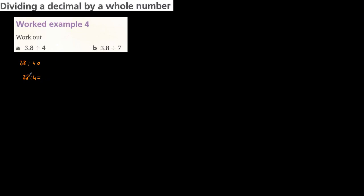In 3 we don't have a 4, so we check 38. We have 9 times 4 equals 36. Subtracting gives 2. We don't have a 4 in 2, so we add a decimal point and a zero. In 20, 5 times 4 equals 20, remainder 0. The operation is finished. 38 divided by 4 equals 9.5.